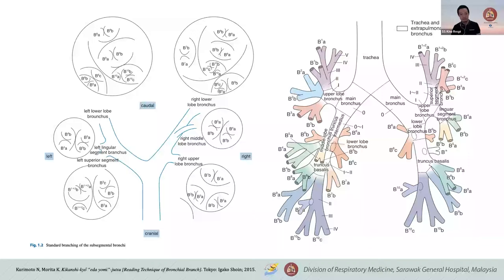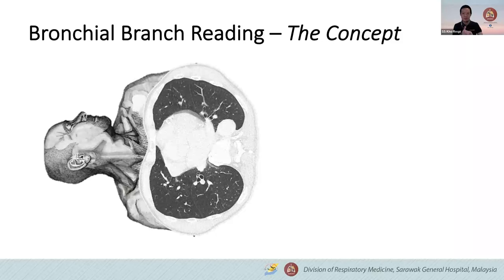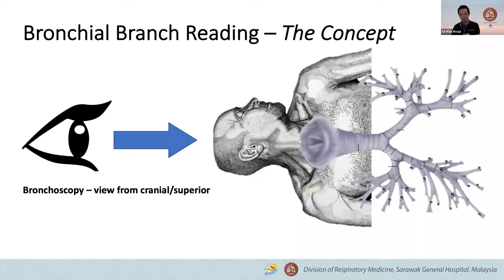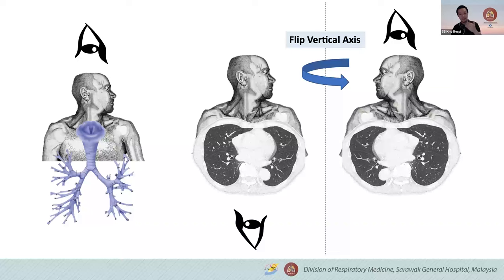The concept of bronchial branch reading technique: when we look at a CT scan, we actually look from the inferior aspect — this is by default. When we're doing bronchoscopy, we are actually looking at the whole airway from the superior aspect. So, how are we going to switch the images from what we view inferiorly to what we are viewing superiorly? If you think of it — if you have a pattern in front of you, you basically just flip it. When you flip it, the CT becomes your view from superiorly. This is the first basic concept of how we flip.